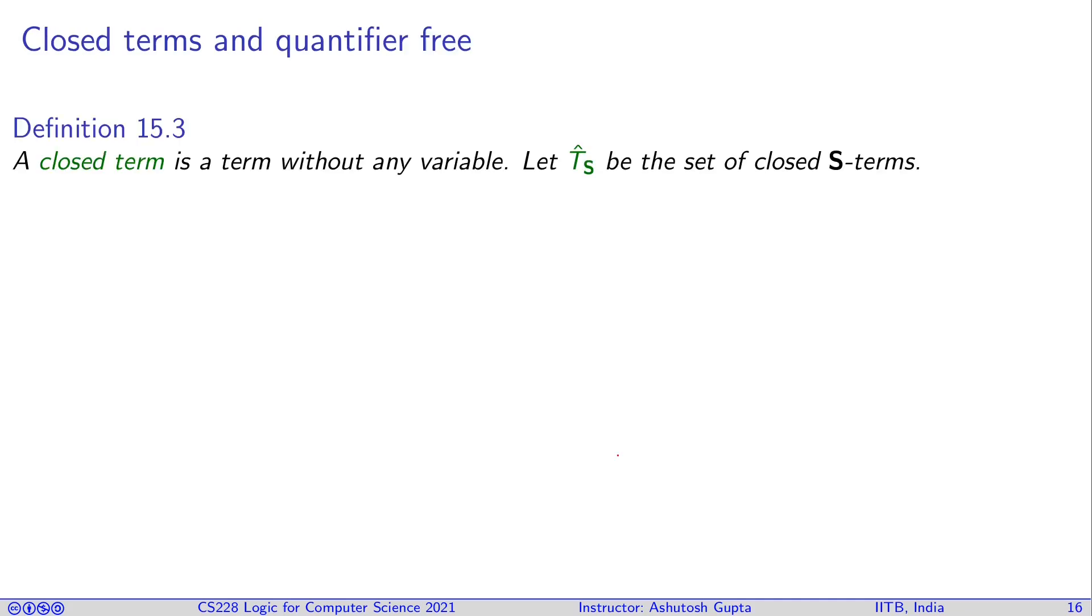Now let's continue and define something called closed terms. What is a closed term? If a term does not have any variable, then you call it a closed term. These are very important terms. This allows you to somehow in proxy describe elements of the domain. Sometimes closed terms are also called ground terms. This term you will see very often in literature. Please remember that ground terms and closed terms are synonymous.